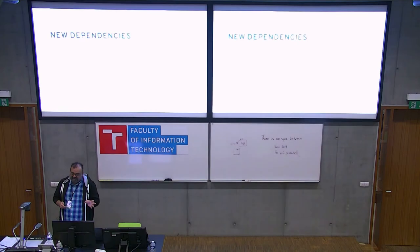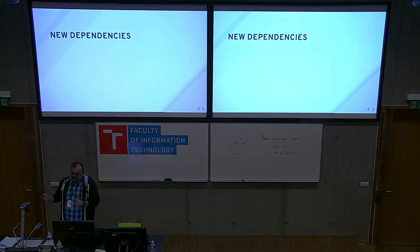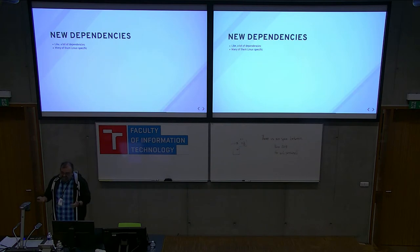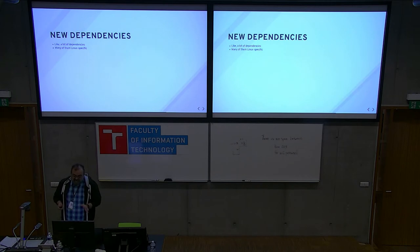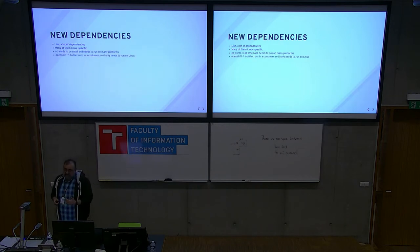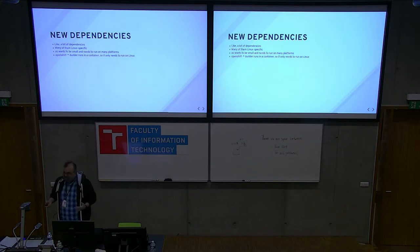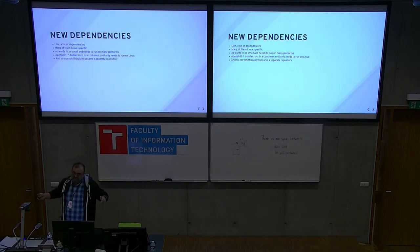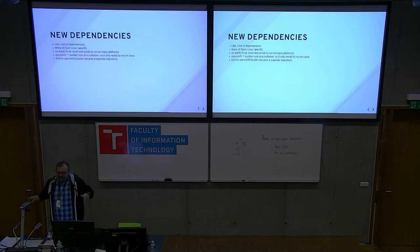Now that that change happened, some stuff broke. The first thing was that all the new build logic had a lot of dependencies — like a lot of them. A lot of those dependencies are Linux-specific, and OC traditionally has been a command that ran on all kinds of operating systems. Since that logic was Linux-specific and it was a ton of new dependencies, OpenShift Builder became a separate repository. So OpenShift STI Builder and OpenShift Docker Builder are no longer the exact same binary as OC — that changed, but it made the testing a lot easier.